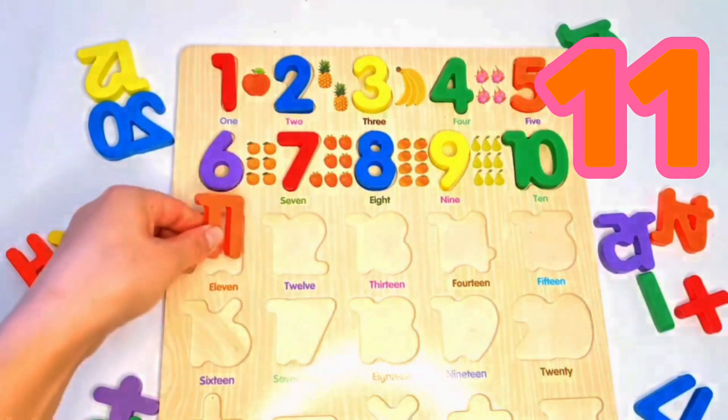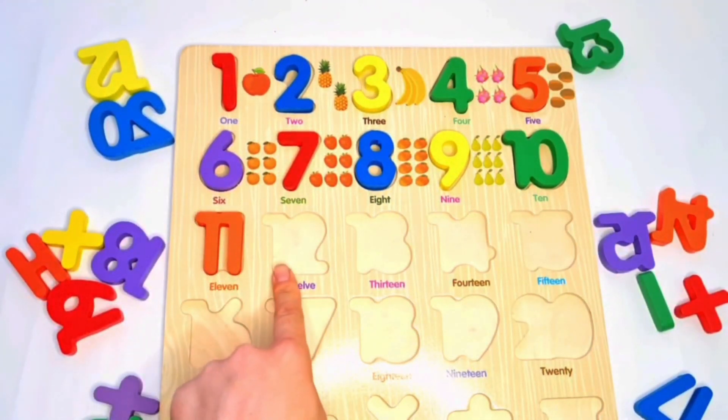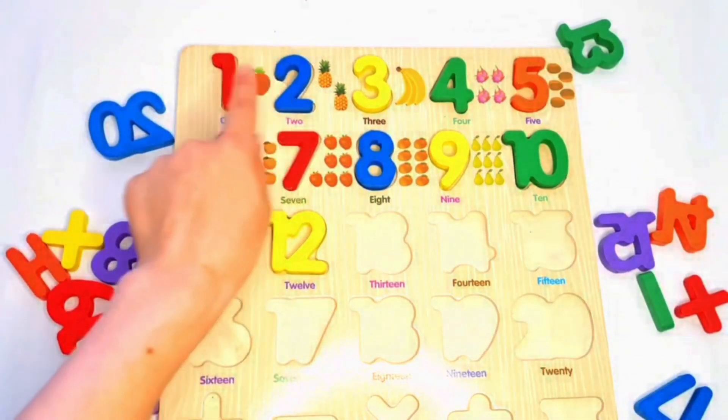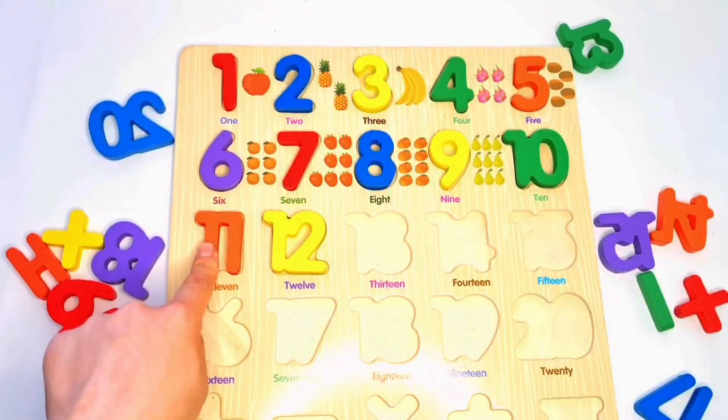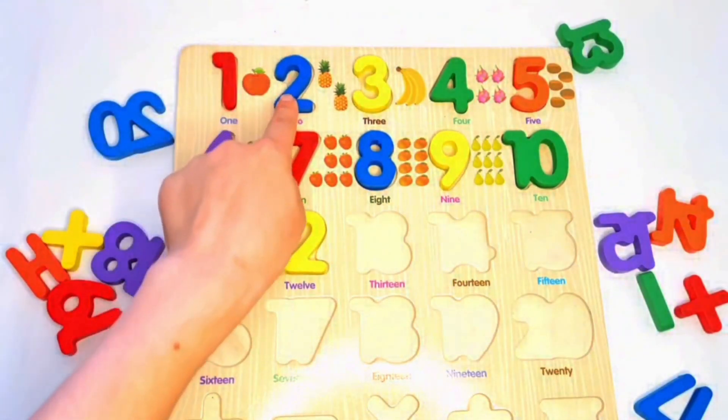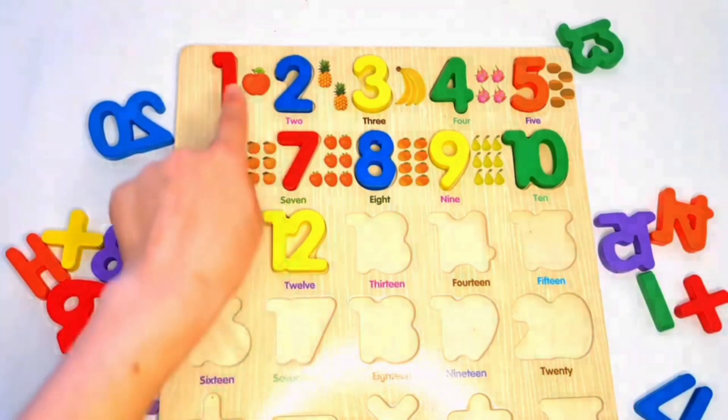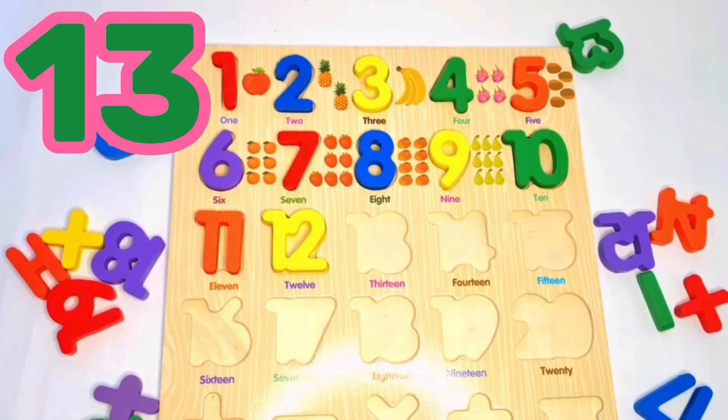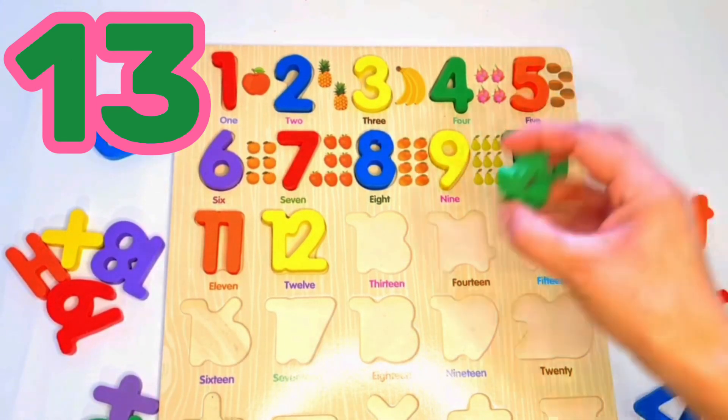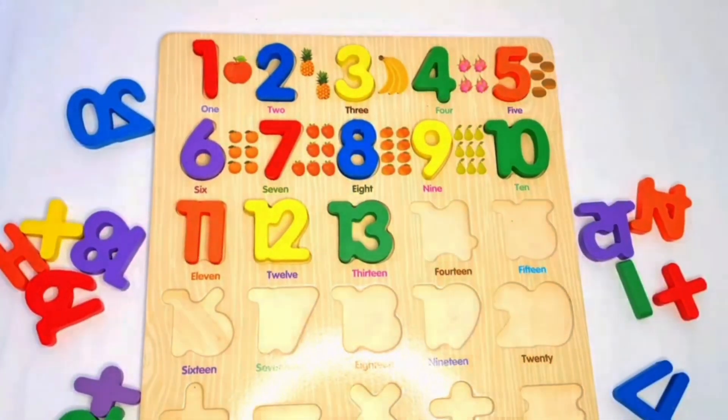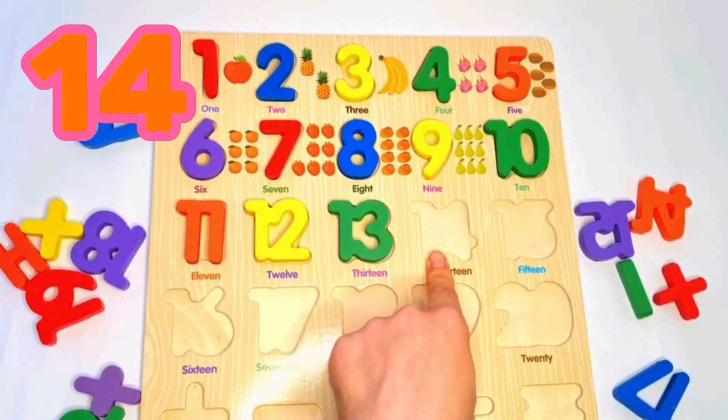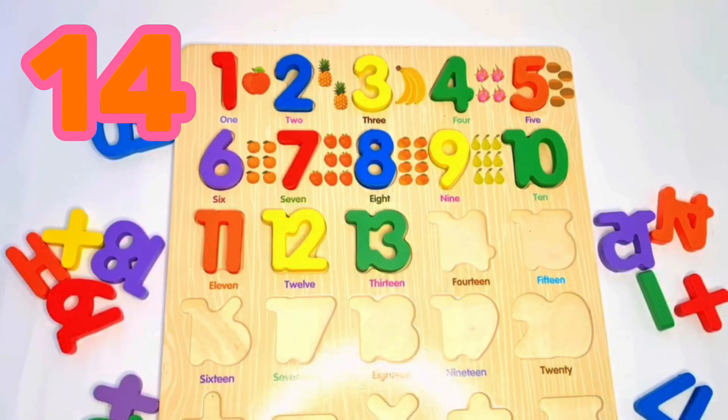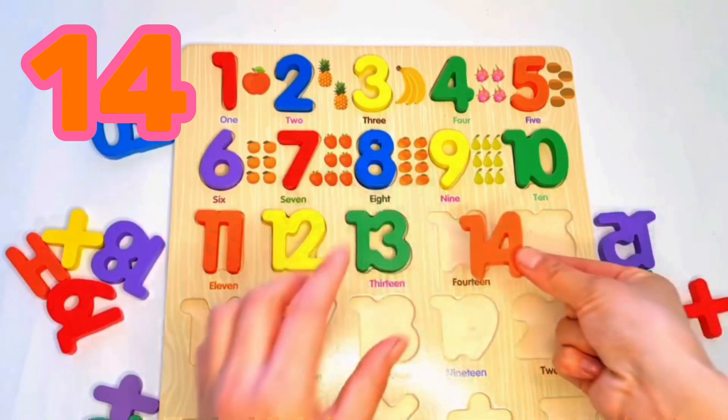Now we will put here eleven. Yeah, after eleven, twelve. Yeah, blue here. Double one, eleven. One and two together, twelve. And one three together, thirteen. We will put here twelve, and one and four, one and four together, fourteen. Yeah, here are fourteen, thirteen.